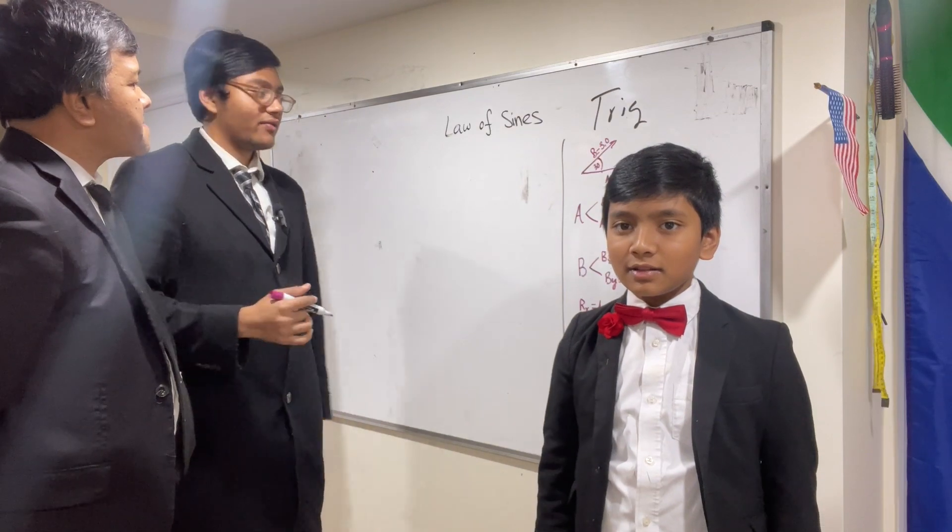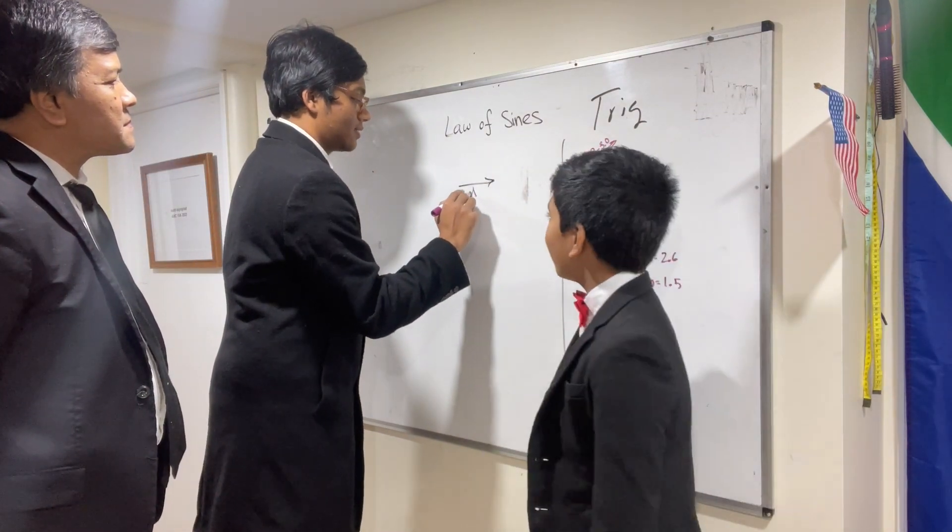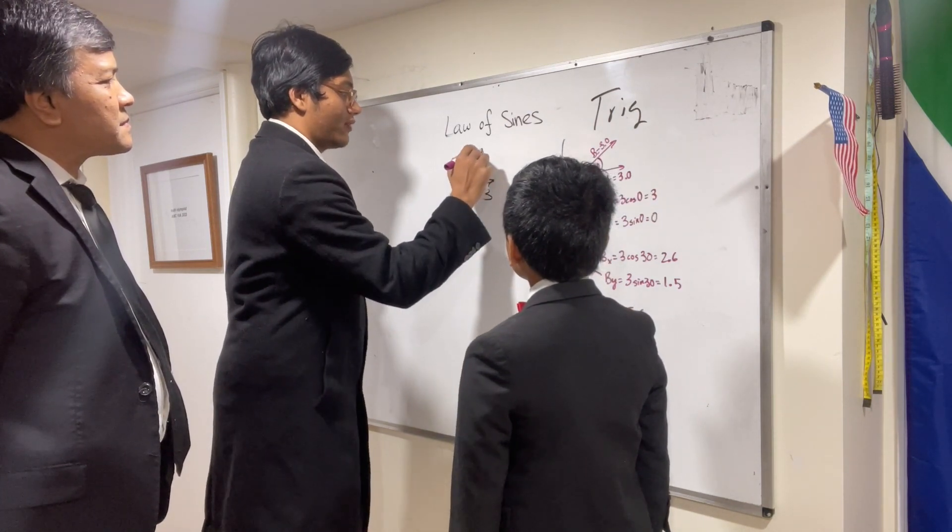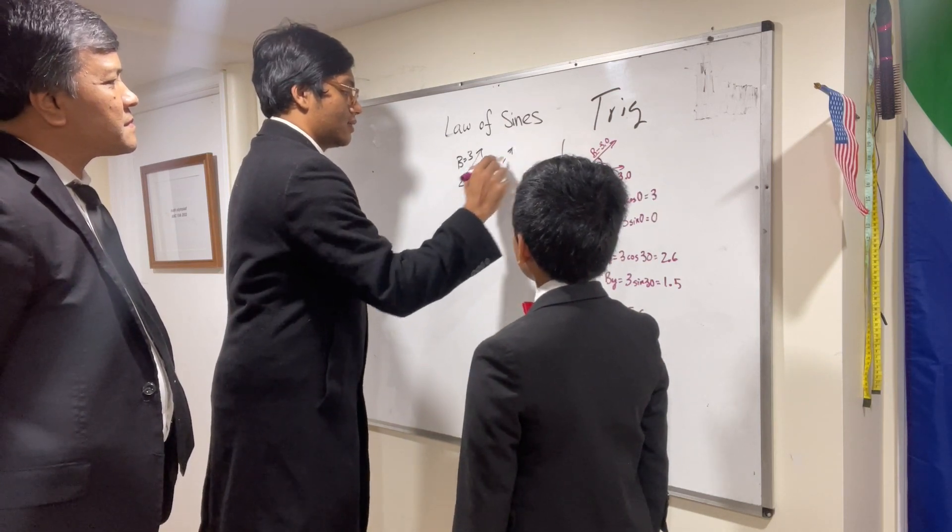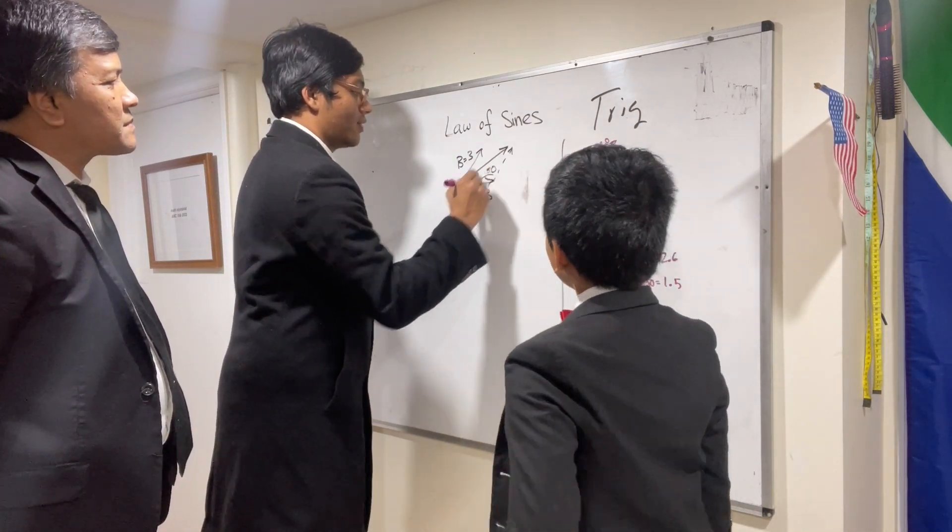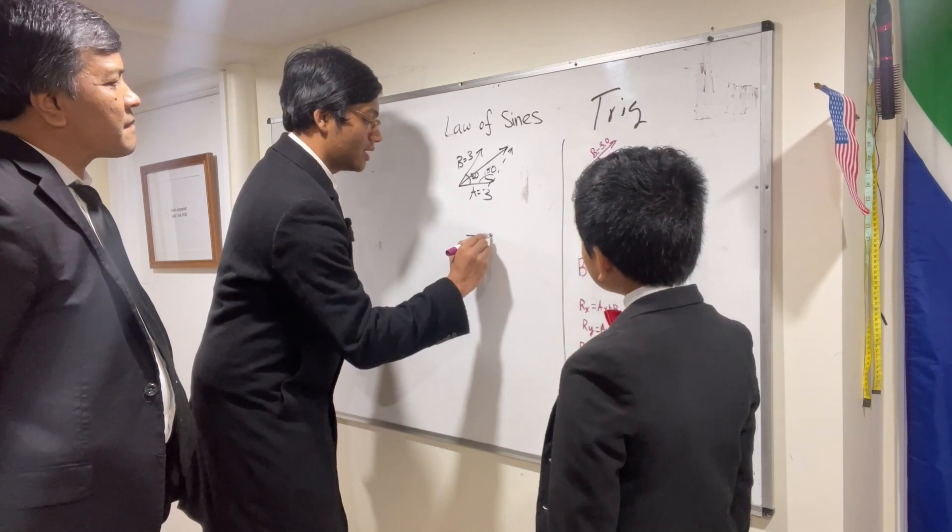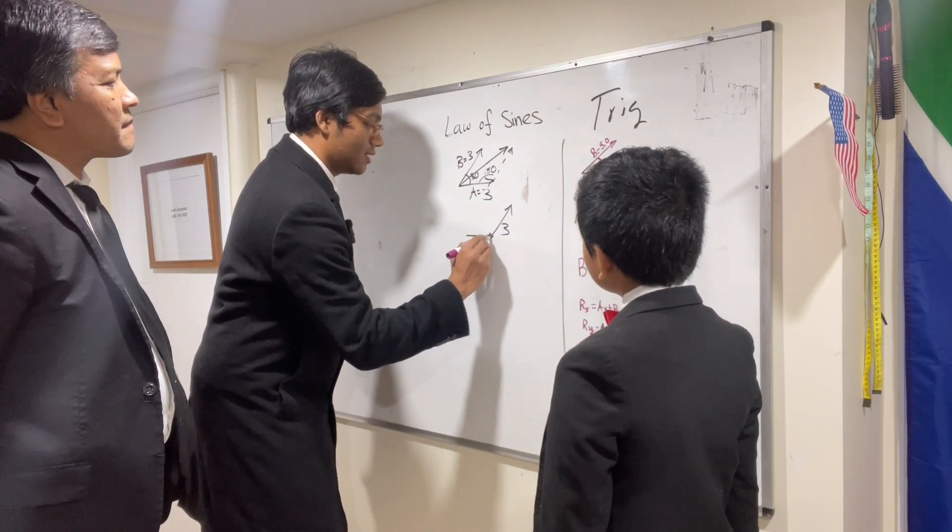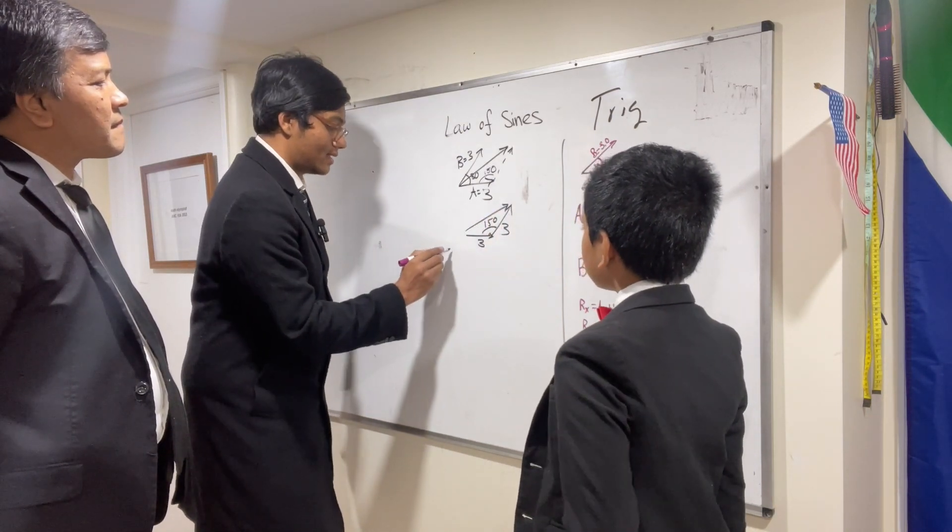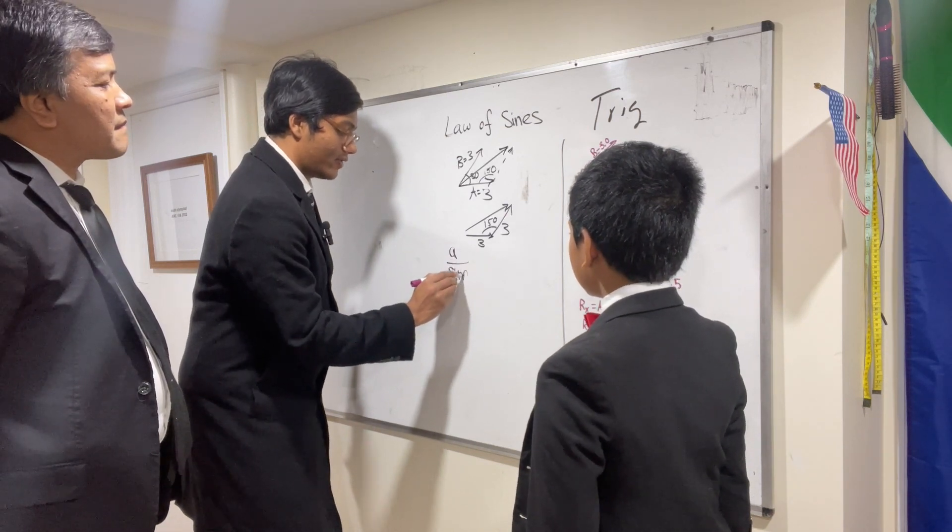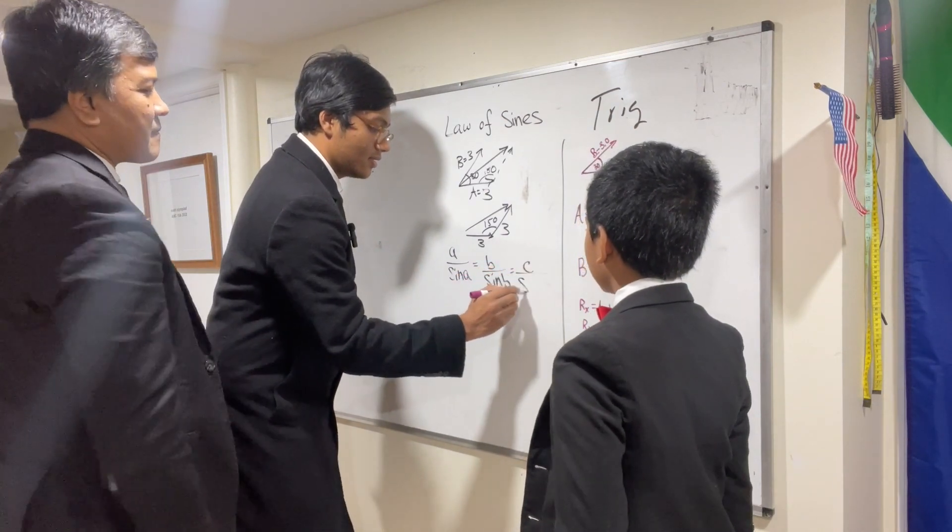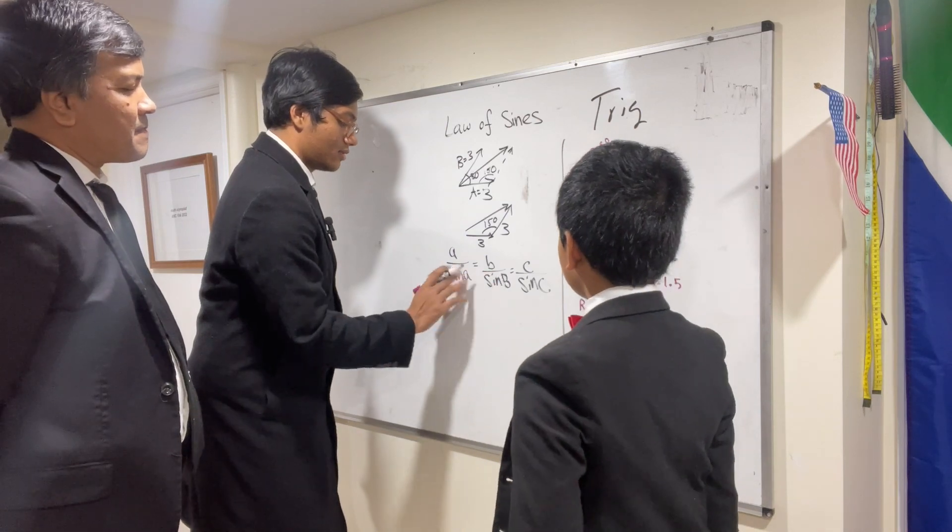So I'm going to use the law of sines to figure out the resultant. So this one is 3, this one is 3, and this one is 30. And we want to find the sum. This one, right? This one, yeah, of course. So this angle right here has to be 150. And so what do we know? We know that this is 3, this is 3, and this is 150.